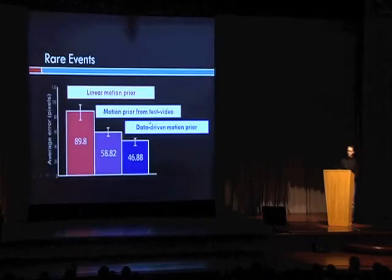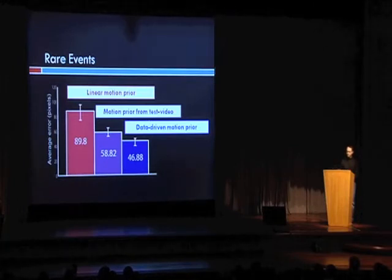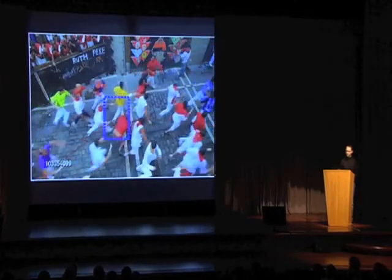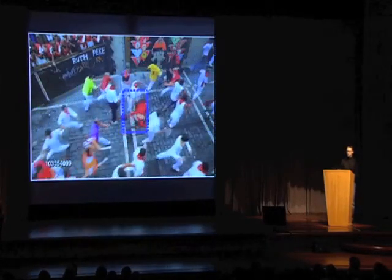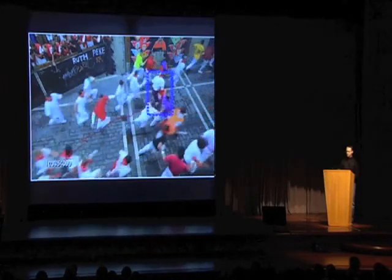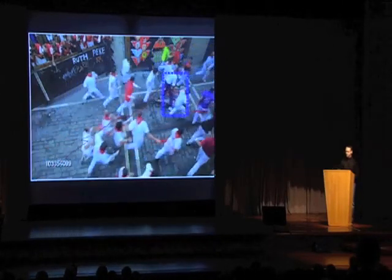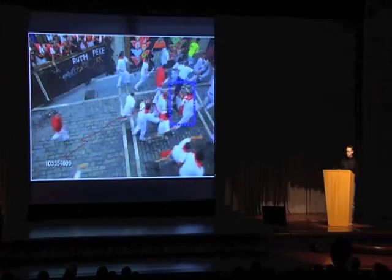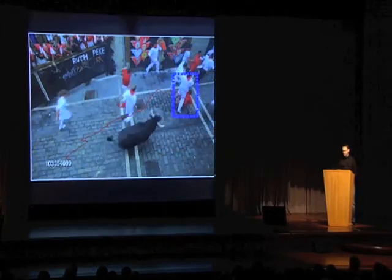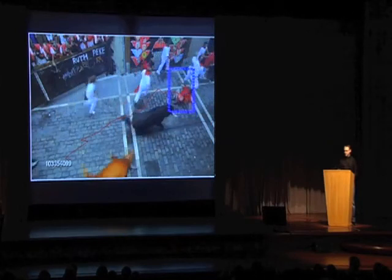This is also indicated by the mean tracking errors shown here. And you may remember that video from the beginning — here's the person being tracked using the data-driven approach. Despite lots of occlusions and interactions, the person is able to be tracked, and again, he's not hurt too badly by the bull.